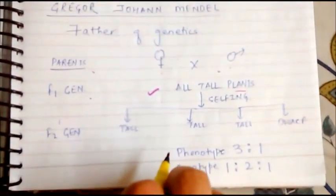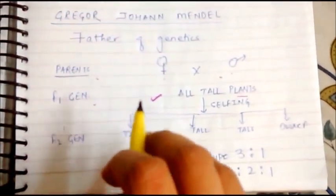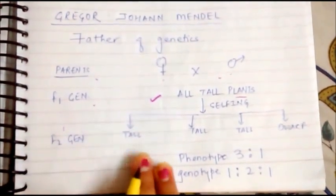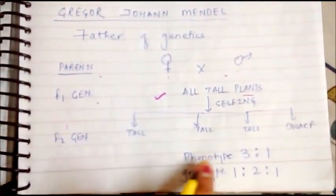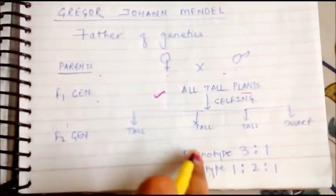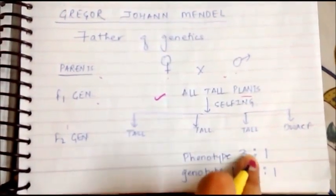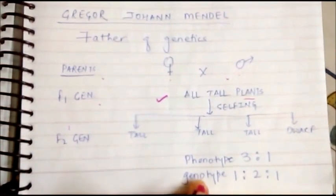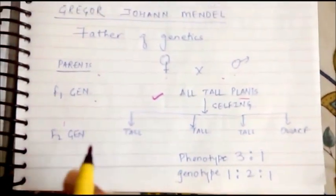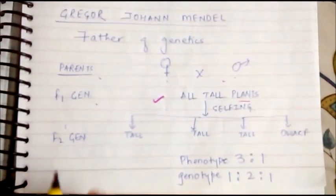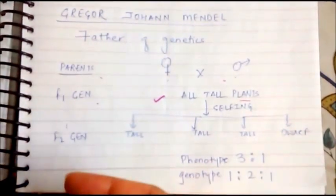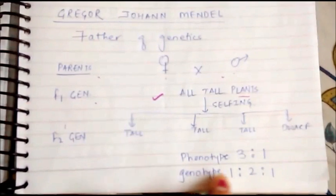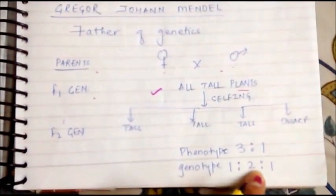If we judge the plants on the basis of physical appearance, the phenotype ratio becomes 3:1. But if we judge them on the basis of genetic combination — whether they are recombinant or pure — then the genotype ratio is 1:2:1.